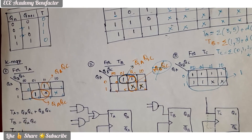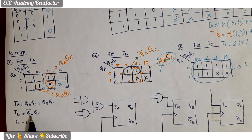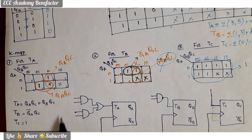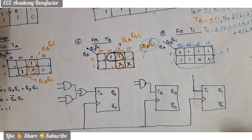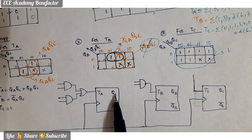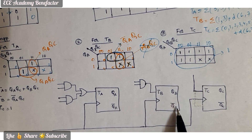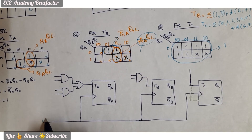We now have three equations from the three K-maps: TA = QA·QC + QB·QC, TB = Q̄A·QC, and TC = 1. Based on these equations we draw the mod 6 counter using 3 T flip flops — TA, TB, TC — with a common clock connected to all three flip flops, because it is a synchronous positive-edge-triggered counter.